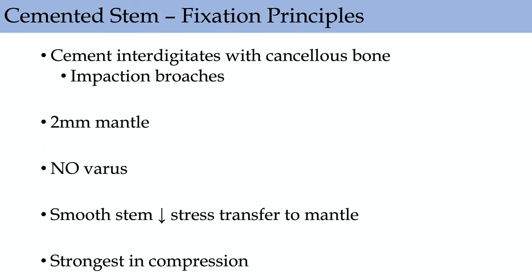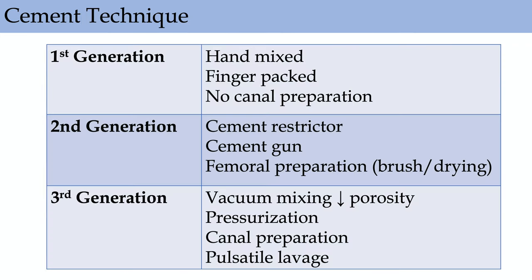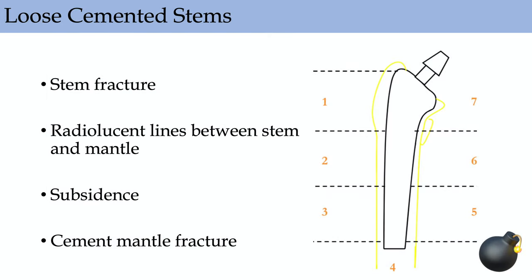For cemented stems, you want about a two millimeter cement mantle. Don't put in varus due to higher cantilever forces. The cement interdigitates with cancellous bone using impaction-style broaches, and cement is strongest in compression. We're all now using third-generation technique with vacuum mixing, pressurization, canal preparation, and pulse lavage. For infection cases, cement technique doesn't matter since you're taking out the components anyway. To tell if a cemented stem is loose, look at: stem fracture, radiolucent lines between stem and mantle, subsidence, or cement mantle fracture. The Gruen zones one through seven describe femoral stem loosening.